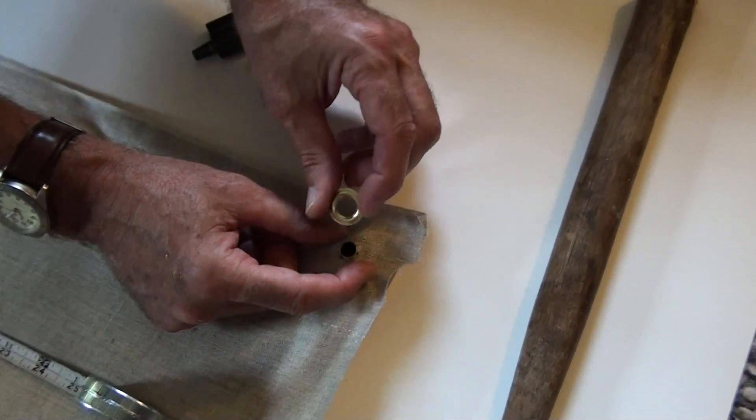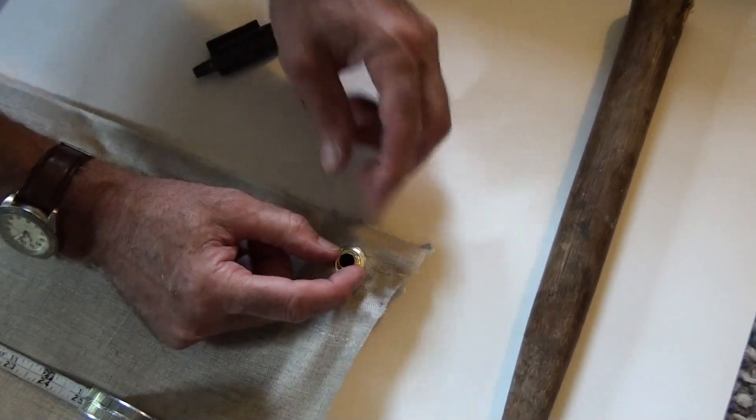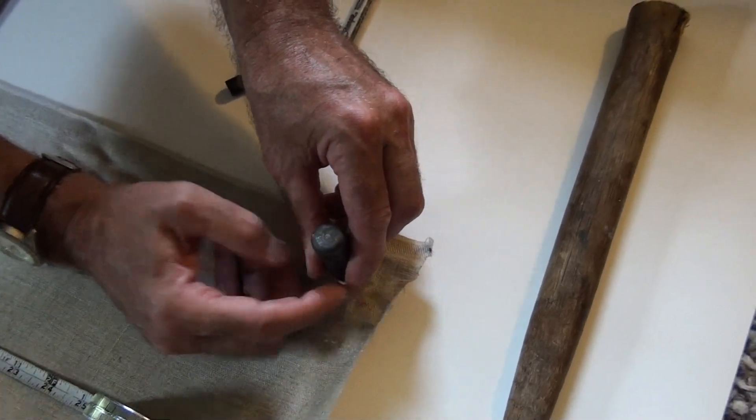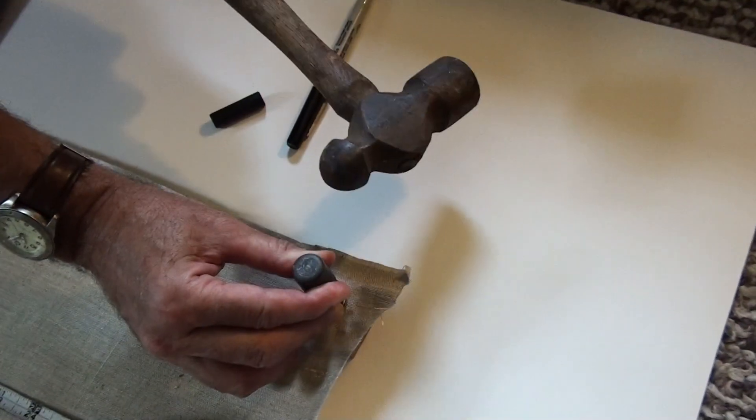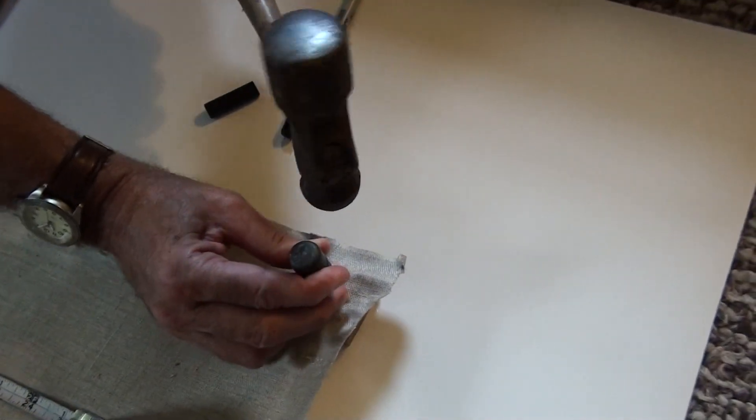Then you're going to place the metal punch into the hole and you're going to flatten that grommet with the ball peen hammer, which we're going to do right now.